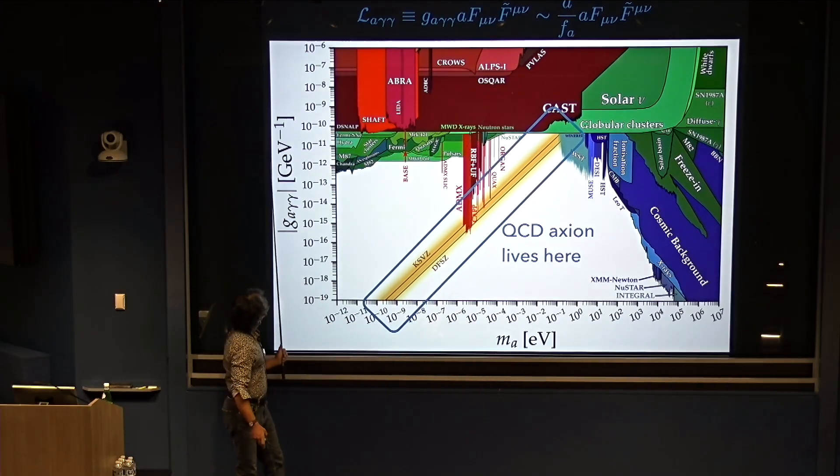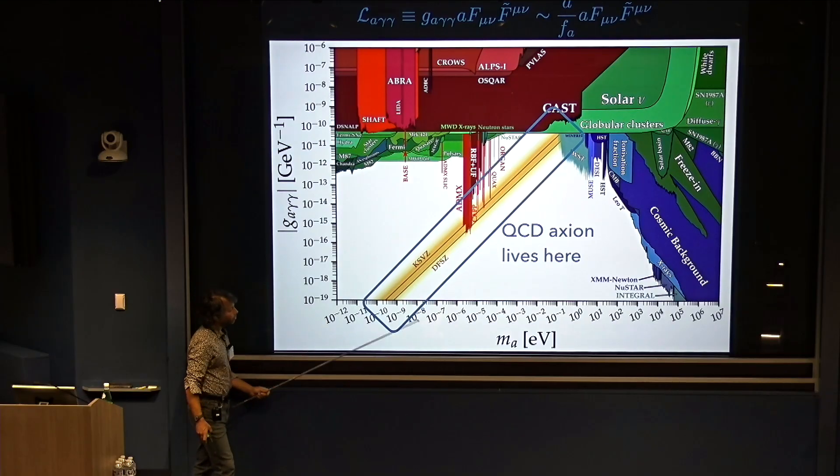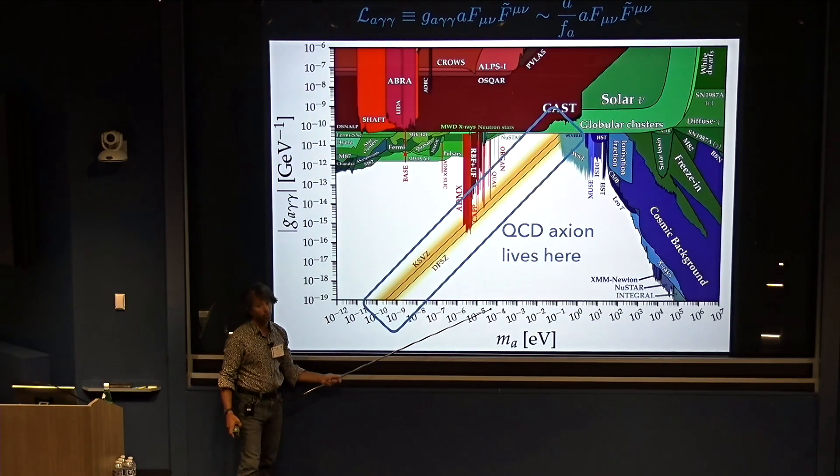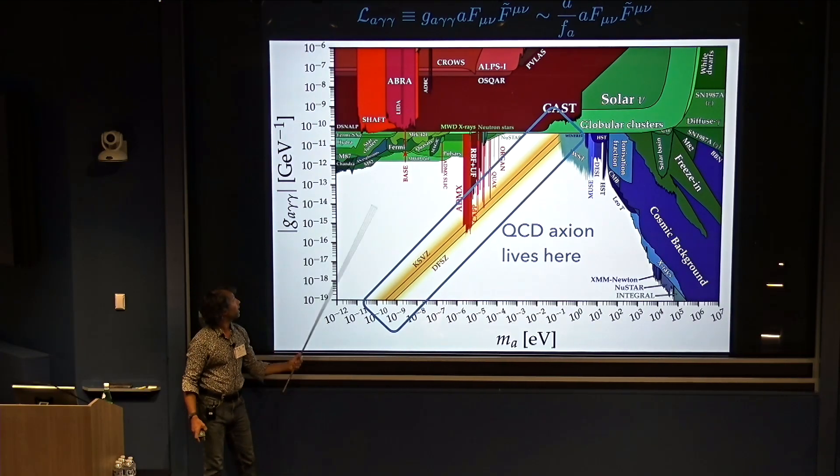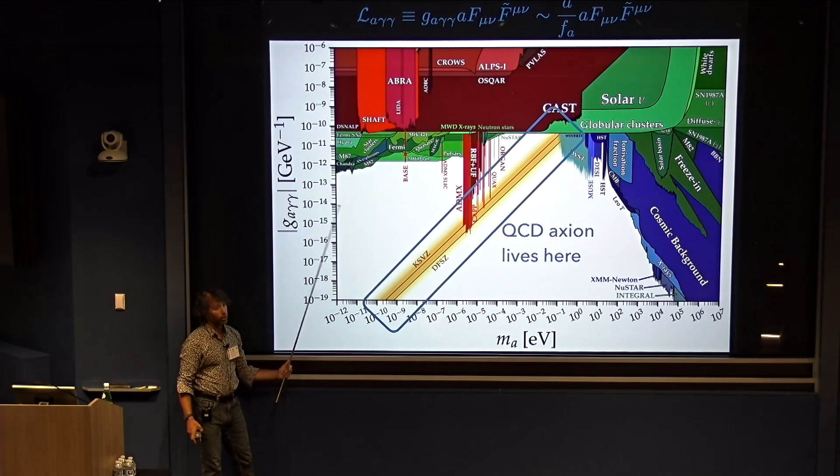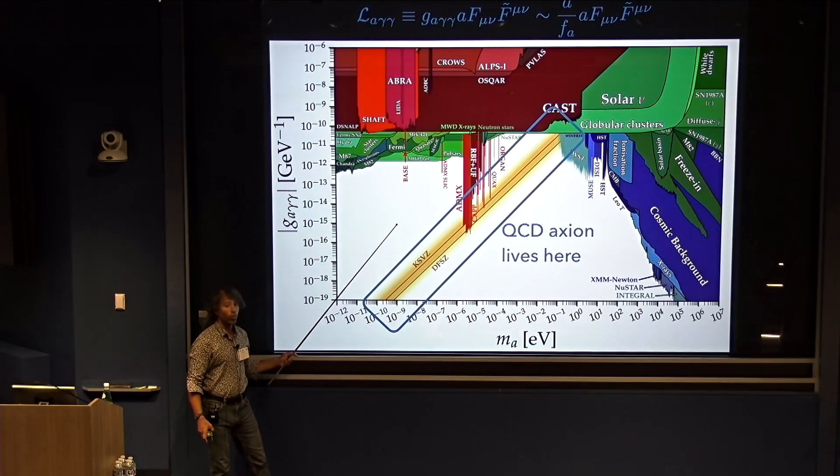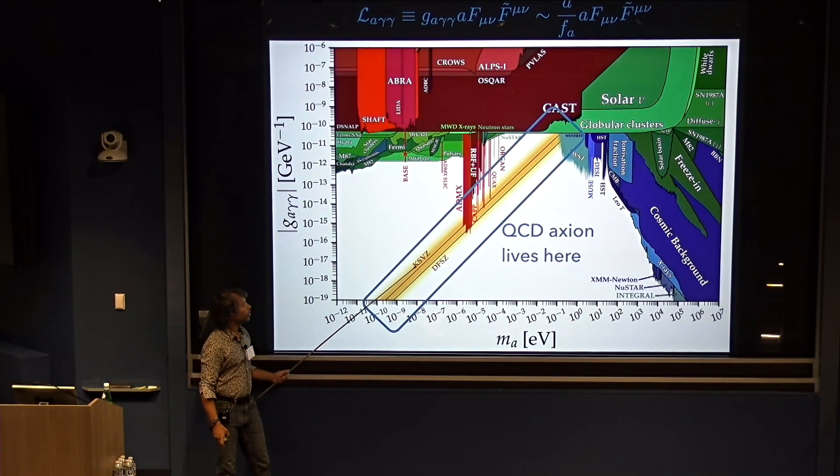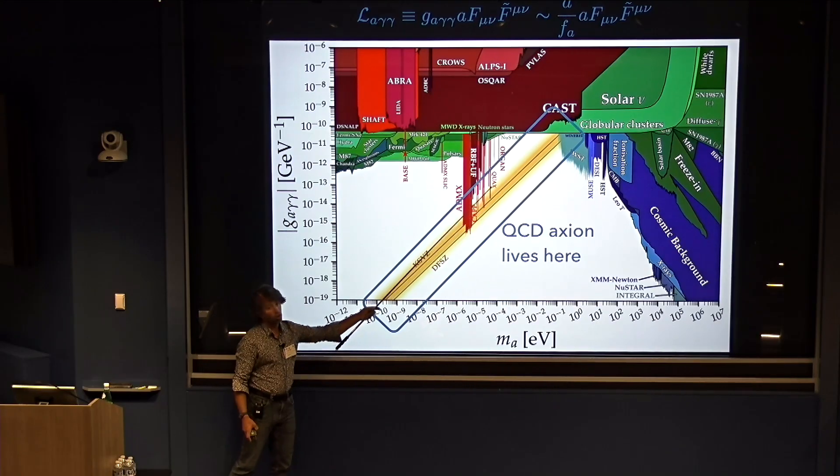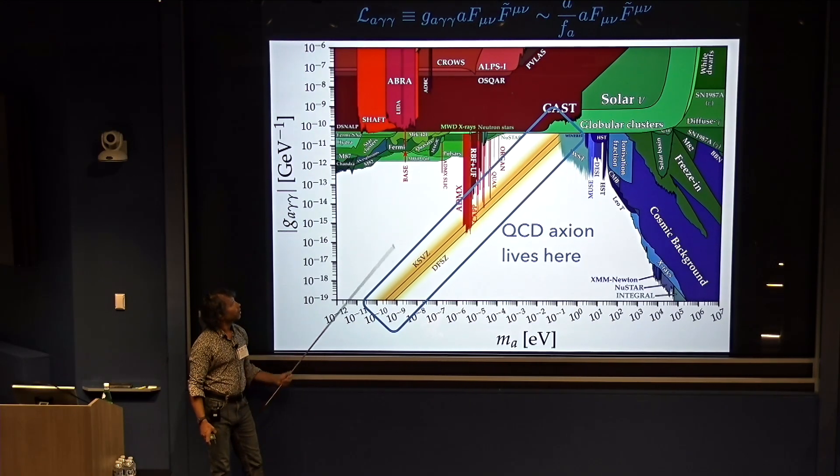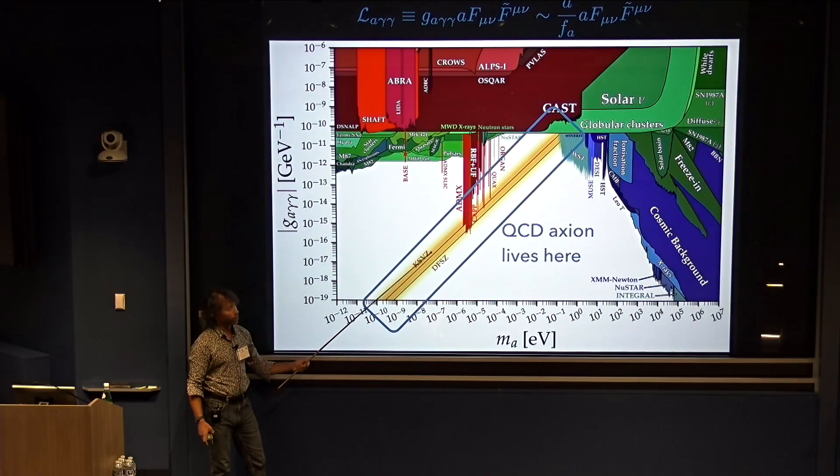The axion photon coupling is inversely proportional to the decay constant. As I mentioned, the mass is inversely proportional to the decay constant. So the mass and the coupling are proportional to each other. And indeed, for the QCD axion, the mass and the coupling are expected to lie on this line. So the only part of this parameter space that you should care about today, or at least in my talk and the next two talks, are the part along this yellow line. That's where the QCD axion can live. People, of course, look for axions elsewhere, but those are not the QCD axions, not the ones we're going to be talking about today.